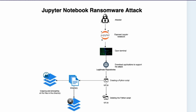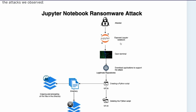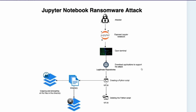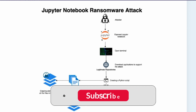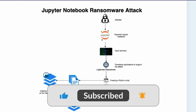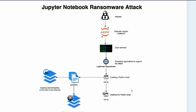The attack is quite intelligent. The attacker takes control of Jupyter Notebook, opens the terminal, downloads malicious repositories or libraries that look legitimate, then creates a Python script. That script goes to directories of interest, encrypts all the files, deletes the remaining unencrypted files, and then deletes itself — leaving no trace. The only way to regain control of your machine is to pay the ransom.